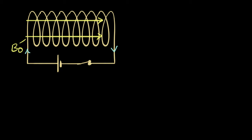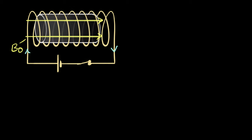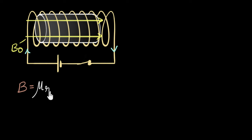A current-carrying solenoid generates a magnetic field. Let's call that magnetic field B0 — the vacuum field — because there's nothing kept inside the solenoid; it's vacuum inside the turns. But if we keep a piece of ferromagnet, say a piece of iron, the magnetic field inside the iron is going to be way stronger than the field outside because iron is a ferromagnet and gets magnetized. We wrote a relationship: the magnetic field inside any material equals μr, the relative permeability, times the magnetic field outside.